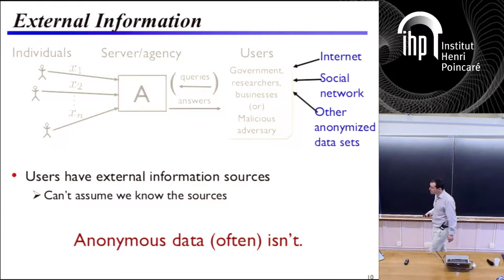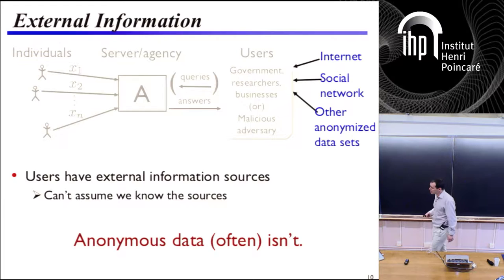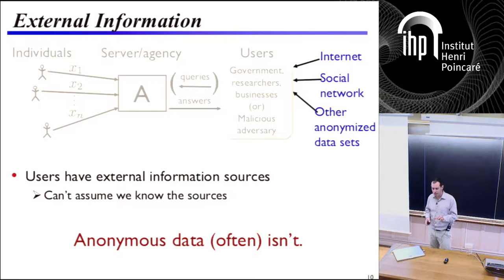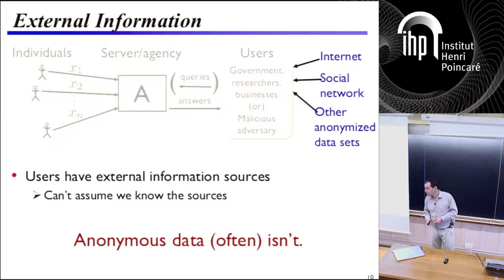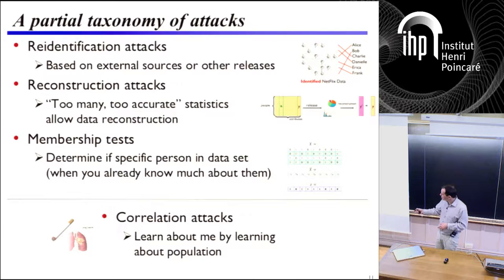The availability of external information makes any approach where you're trying to anonymize data — just removing names or doing really simple things — challenging. As a general rule, things that are claimed as anonymized versions of a data set generally aren't. So let's see some examples. We'll see attacks that can happen on data sets: re-identification attacks, reconstruction attacks, membership tests, and a little bit about what I'll call correlation attacks.